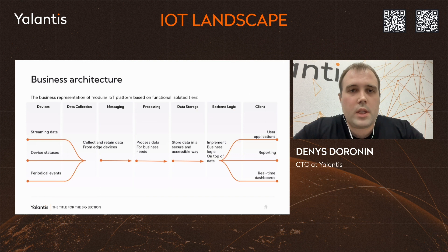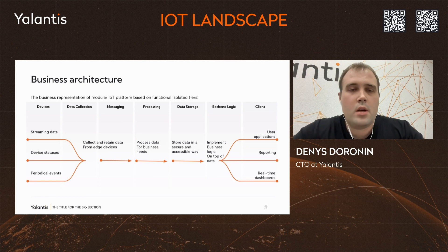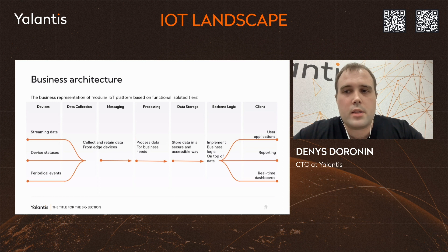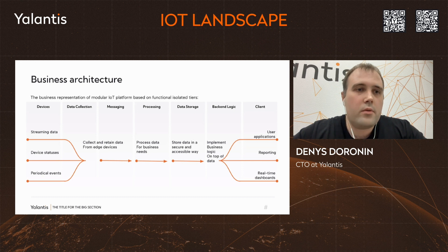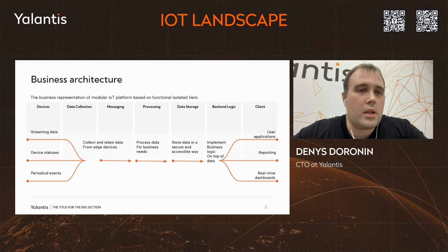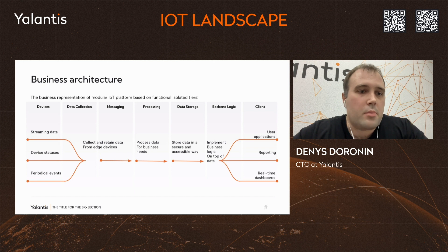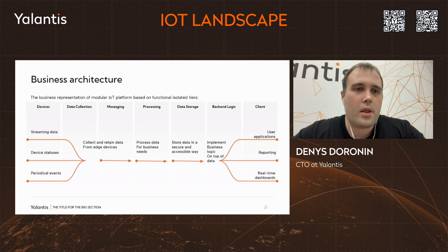We will dive into technical details starting from our business architecture. Our platform operates on five different tiers that are designed to be interchangeable and isolated from each other. Everything starts from devices — your physical edge devices that are streaming data, sending statuses about how they operate, and generating periodic events. That is essentially where your data is generated.